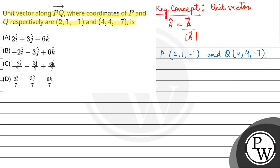So first we'll write the position vector of P: 2î + 1ĵ - k̂. Similarly, the position vector of Q: 4î + 4ĵ - 7k̂.